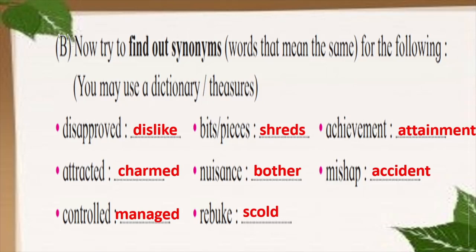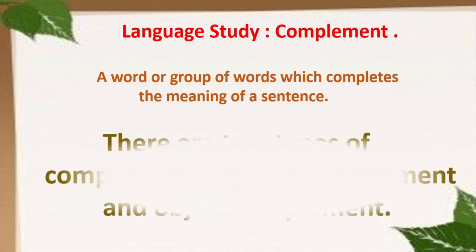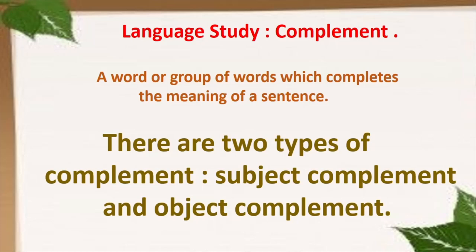Now we come to the language study or grammar part: complement — subject complement and object complement. Before going further, let's understand what a complement is. A complement is a word or group of words — also called a phrase — which completes the meaning of a sentence. In a sentence, there are two types: subject complement and object complement.